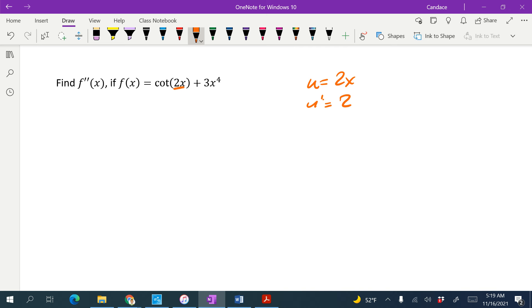Alright, so let's go ahead and start taking the derivative. So f prime of x equals the derivative of cotangent is cosecant squared. Actually, wait a minute, I should have written it out with my u first. So f of x equals cotangent of u, and then I'm just going to keep the plus 3x to the 4th.